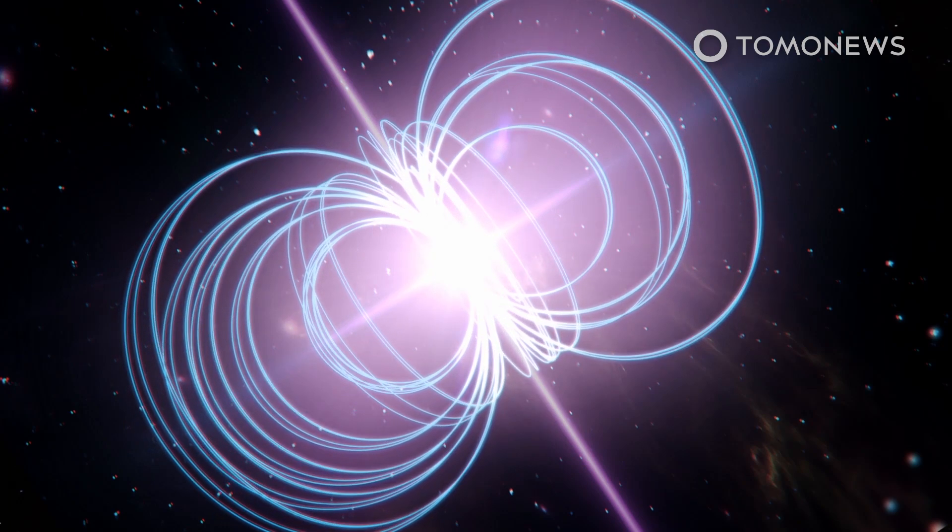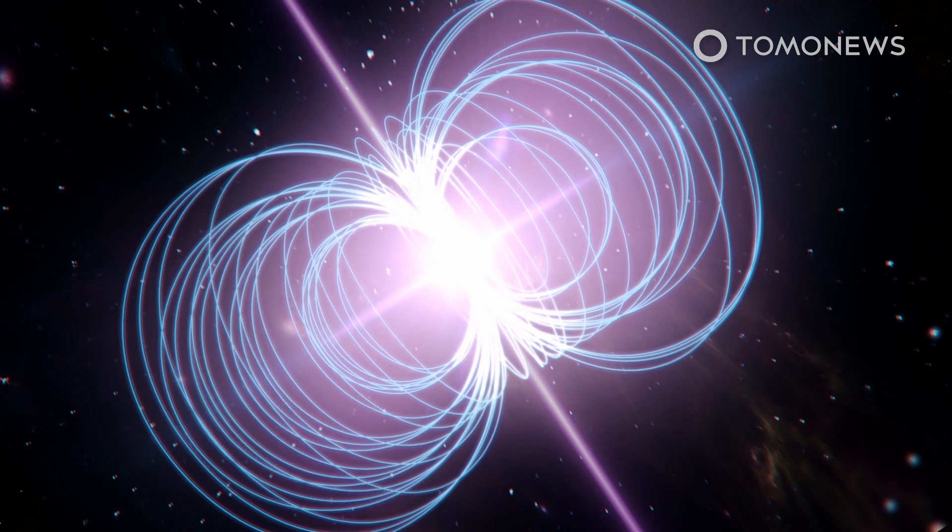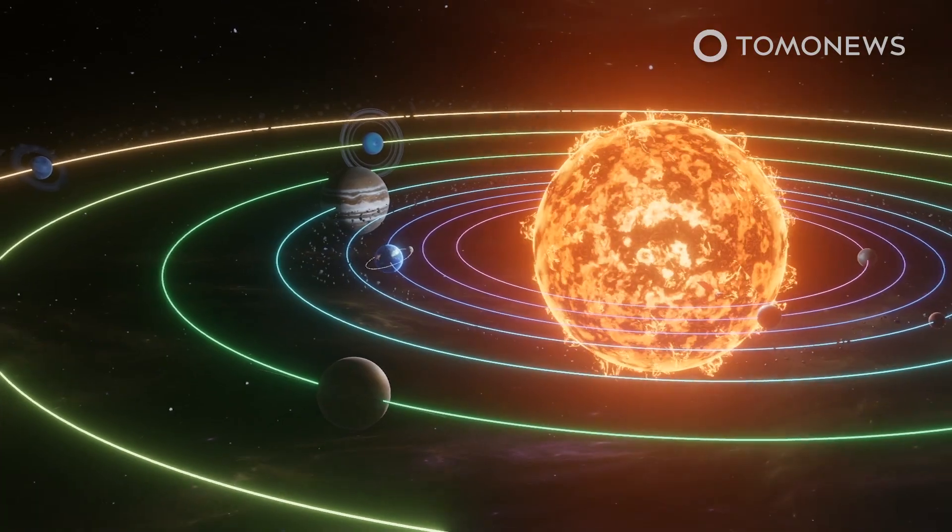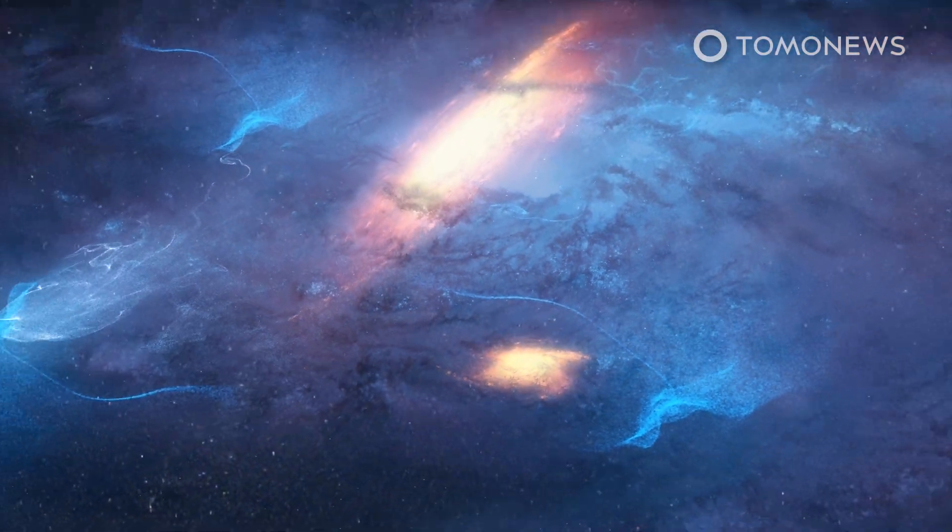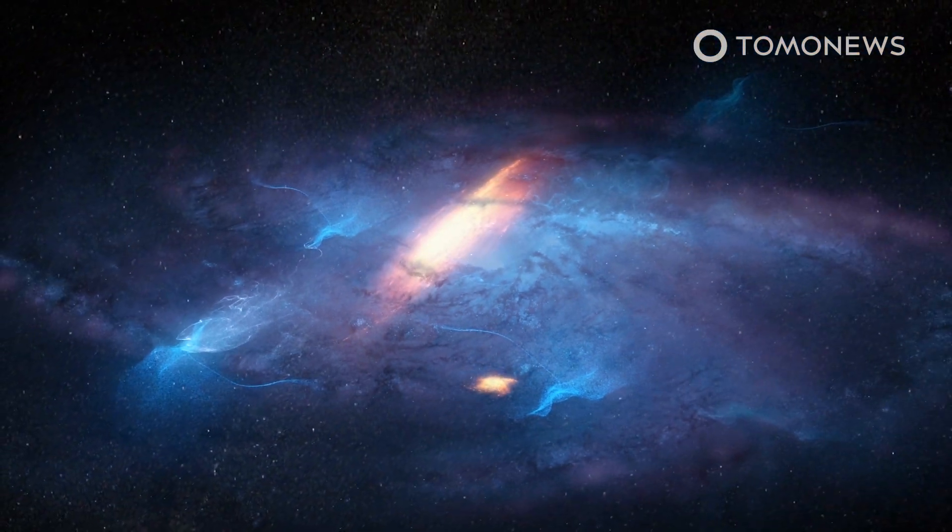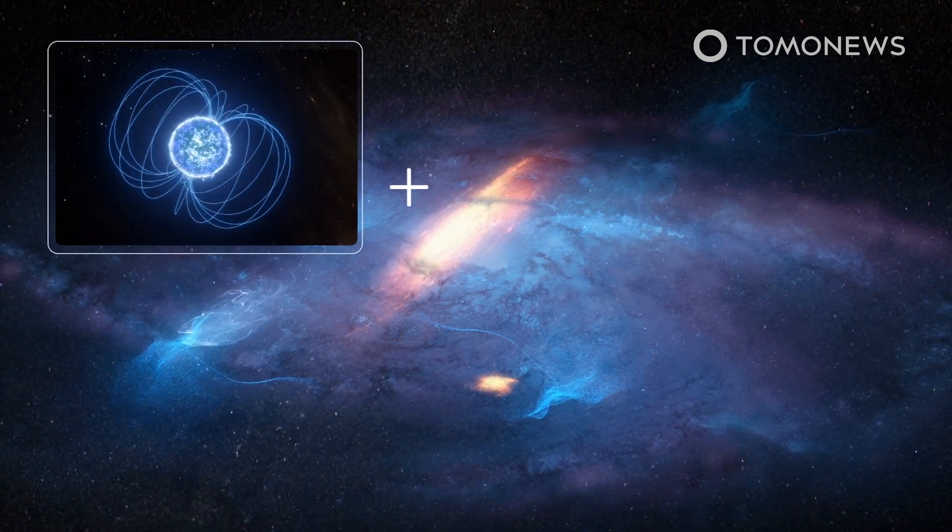If you missed our previous video about magnetars, you can watch it by clicking on the card that should have just popped up at the top right of your screen. This magnetar is located 16,000 light years away from Earth in the constellation Sagittarius. Since its supernova was visible 240 years ago, the star is 16,240 years old.